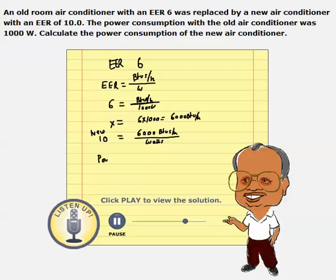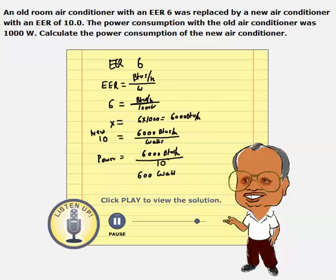To calculate the power, we have a 6,000 BTUs per hour load, and we know the EER is 10. So dividing by this, we get the power, which is 600 watts. By replacing the old air conditioner, which used to consume 1,000 watts, with this new air conditioner that has an EER of 10, we are reducing the power consumption to 600 watts.